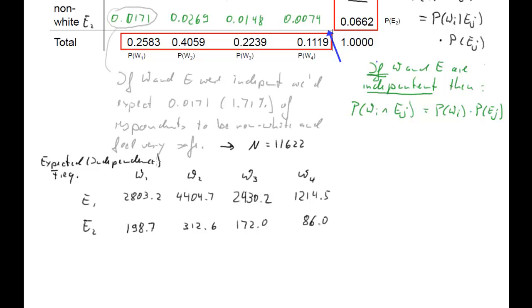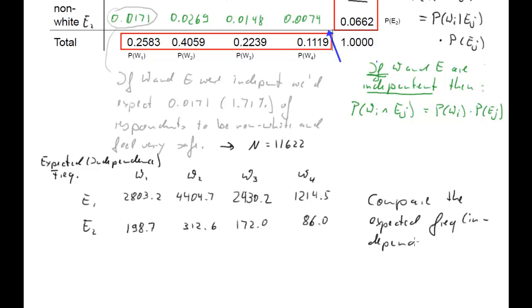These numbers are slightly different from the lecture notes because in the lecture notes I used the precise probabilities rather than the rounded ones, but you should see they are only very slightly different and will not change our final results. These are now what we call expected frequencies - expected under the assumption of independence.